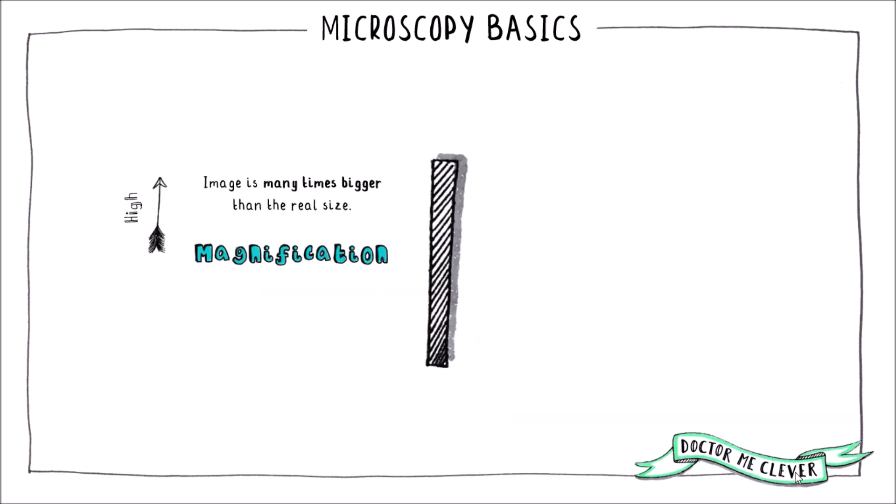Magnification can be high or low. A high magnification means that an image is many times bigger than the actual size of the specimen, maybe thousands or millions of times bigger. Whereas a low magnification means that the image is only several times bigger, maybe tens or hundreds of times bigger than the original specimen.